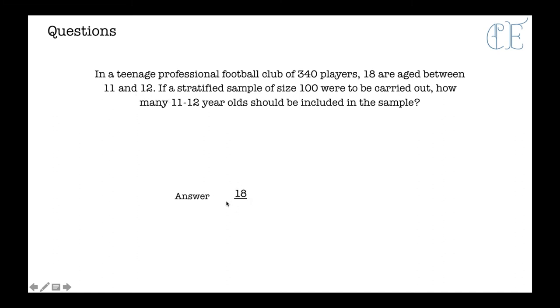Well, if 18 are the ones that are going to be chosen, it's out of a total of 340 players. Don't forget to press 18 divided by 340 on your calculator, and then press equals, and then we times it by 100, because that is our sample size, and that gives us 5.29. So we would say 5 eleven to twelve year olds should be included in the sample.